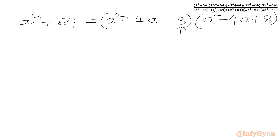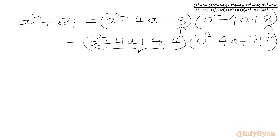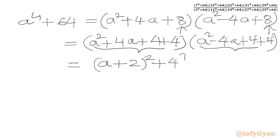Now we are going to split this 8 from both brackets. In the first bracket we write a² + 4a, and 8 as 4 + 4. In the second bracket we write a² − 4a, and 8 as 4 + 4. From the first bracket's three terms we get (a + 2)² + 4, and from the second bracket we get (a − 2)² + 4.